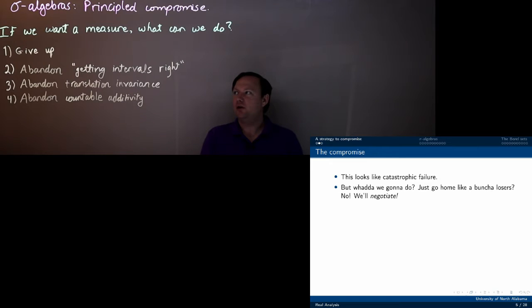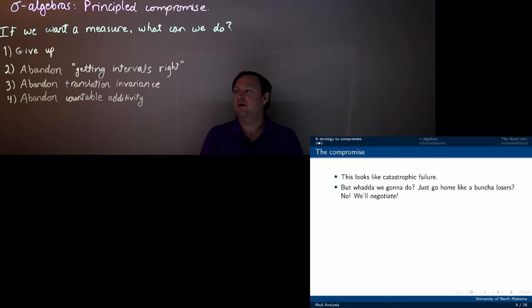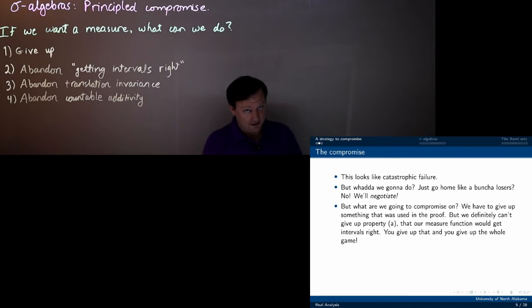So it may be worth really struggling to find a way to get countable additivity if maybe we give up something that occurred in the proof that this thing cannot exist. So the proof depended on getting intervals right, translation invariance, countable additivity.